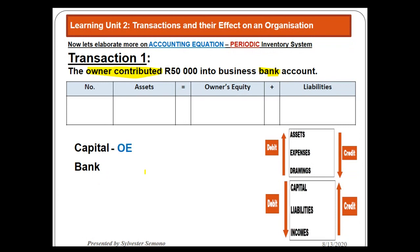Next, we classify the accounts according to their groups. Capital is owner's equity (OE). Bank is an asset. After classifying, we check the movement. If the owner brought capital to the business, the capital of the business goes up — so I put an upward arrow. The bank account of the business also goes up because the business received money.